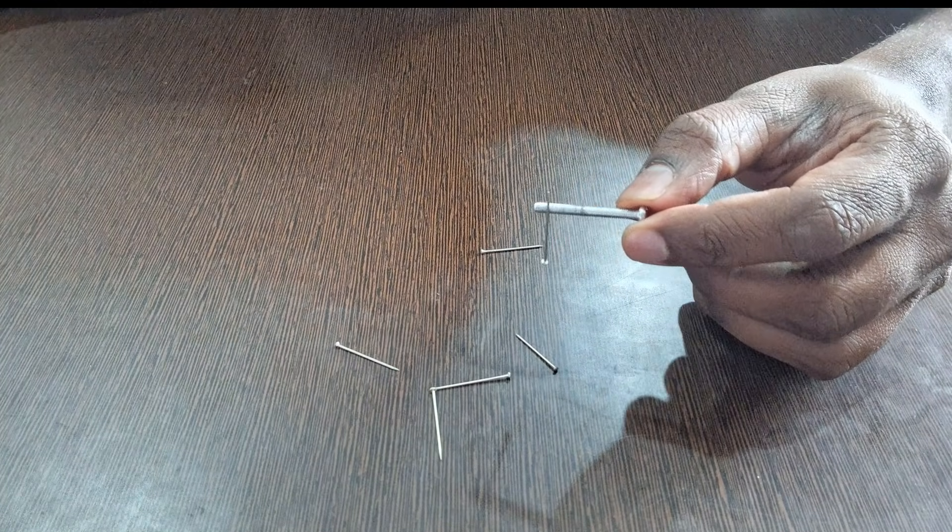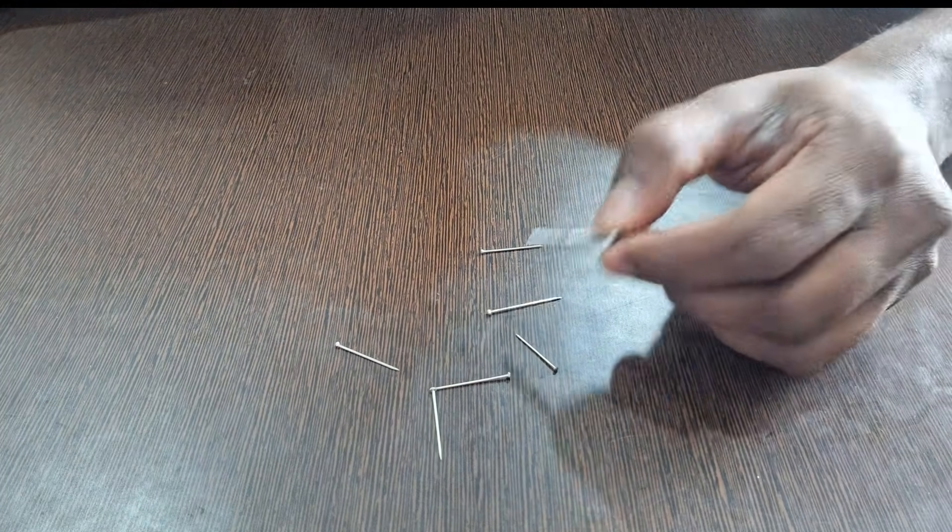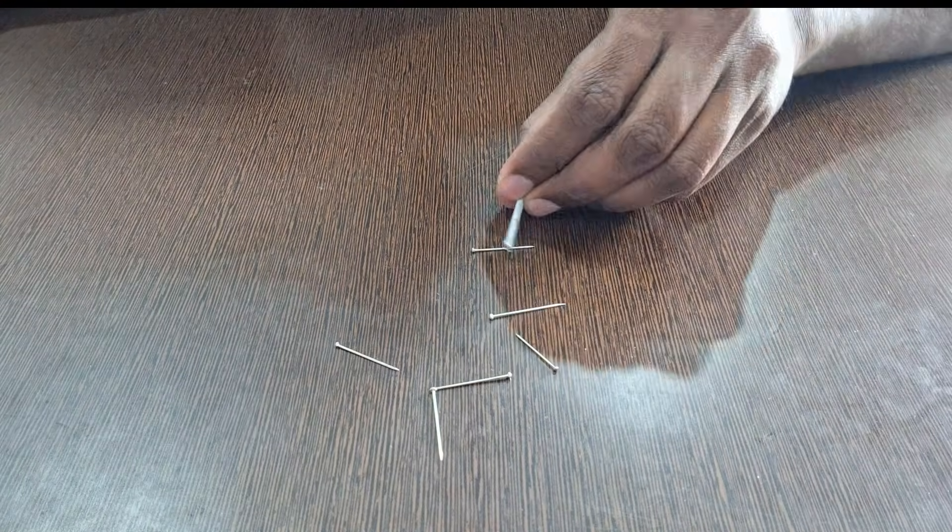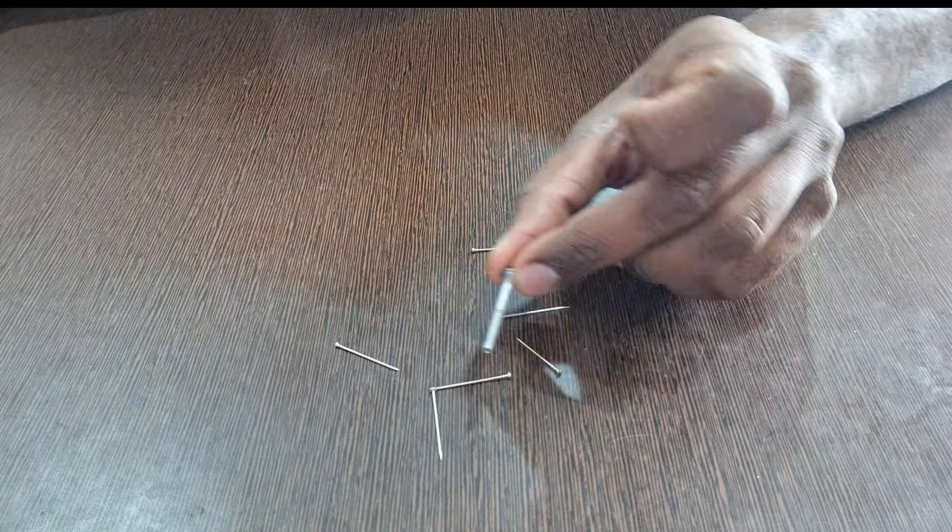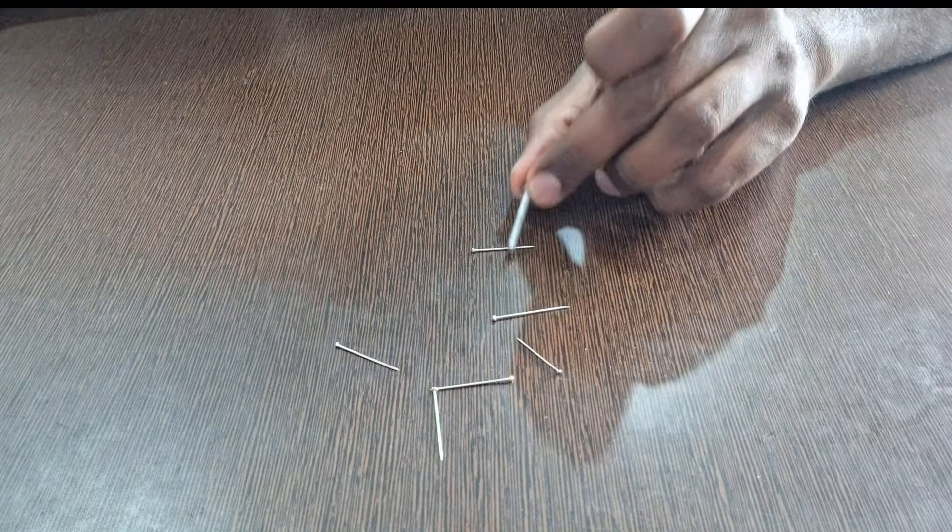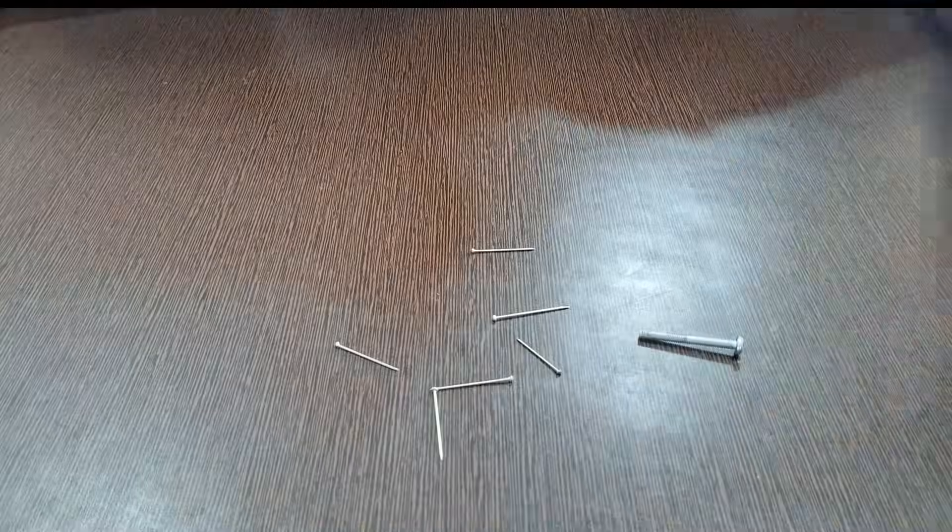But you'll notice that this magnetic property of the steel screw isn't very strong. If I tried to pick up pins again with the steel screw, it just doesn't work. So there is some tiny bit of magnetism transferred onto the steel screw from the magnet, but not too much.